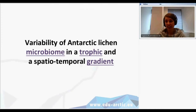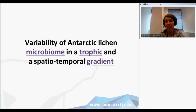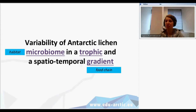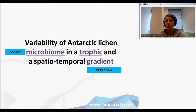Let's have a look at the title of the project: 'Variability of Antarctic Lichens Microbiome in a Trophic and Spatial-Temporal Gradient.' I underlined three words that might be a little bit confusing. Just try to add some synonyms to those terms. For example, microbiome is a type of habitat for bacteria, and the trophic gradient is connected more or less with the food chain. So it becomes a little bit more understandable — we need to transform it into regular people's speech.